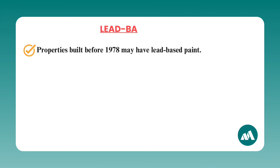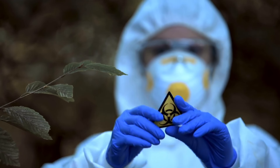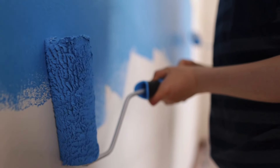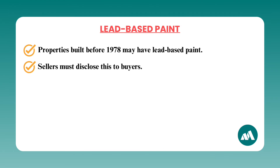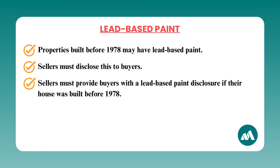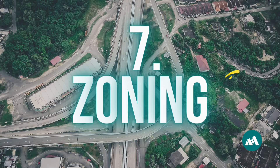Number six: lead-based paint. Properties built before 1978 may have lead-based paint, and sellers must disclose this to buyers as exposure can cause serious health issues. Sellers of homes constructed before 1978, when its use was banned in residential properties, must provide buyers with a lead-based paint disclosure outlining any known hazards, and even a pamphlet detailing the risks. This federal requirement was created to protect occupants, especially children, from harmful effects of lead poisoning, which can cause developmental issues and other severe health problems.